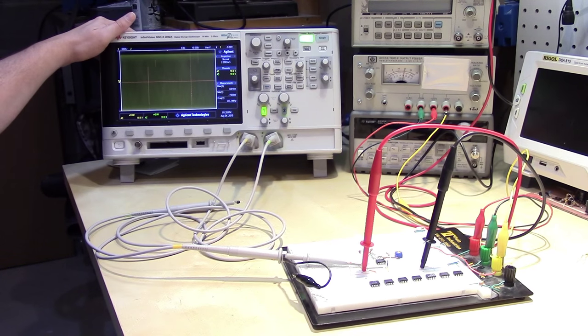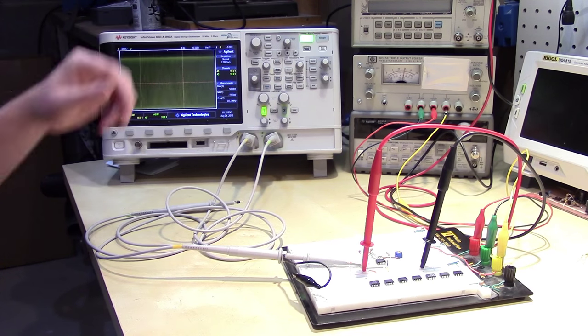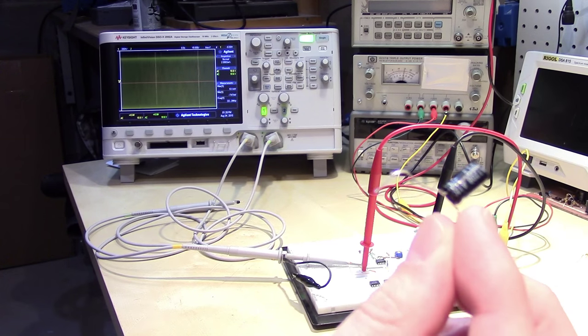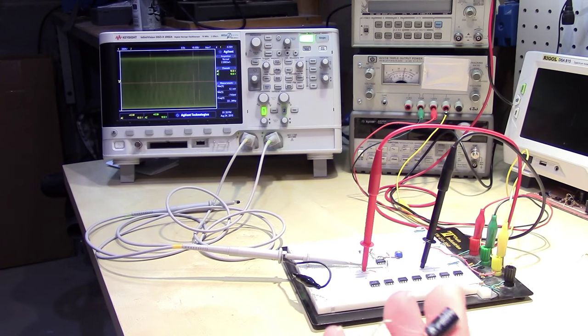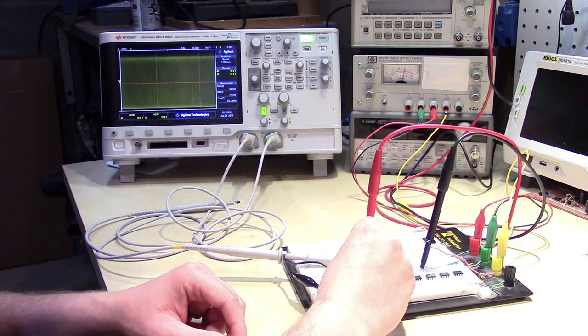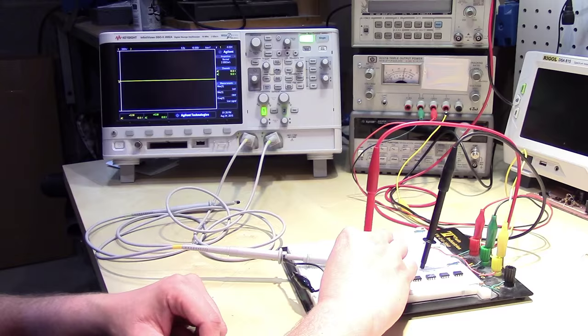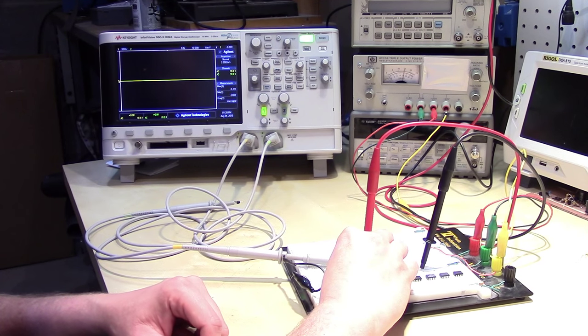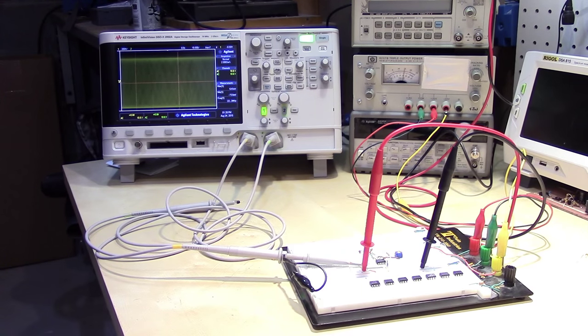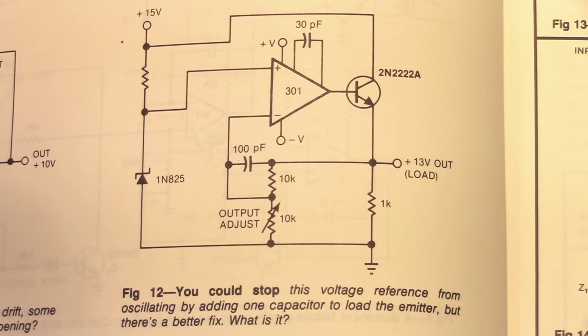So here is our oscillating circuit. Now I have a 47 microfarad capacitor that I'm just going to stick across that emitter resistor and we'll see what happens. So you can see as soon as I put that capacitor across the emitter resistor, the oscillation goes away. And if I take the capacitor back off, it comes right back. And if you recall, that's exactly what the question originally told us would work. However, as it points out, it's not the best solution. So let's look at alternative ways of preventing oscillation in this circuit.